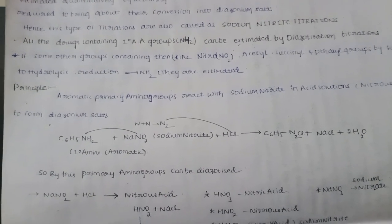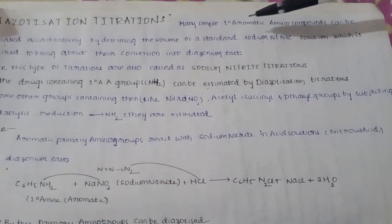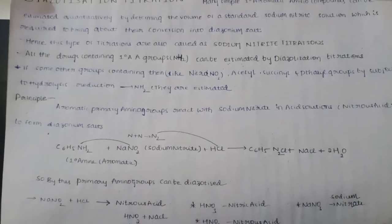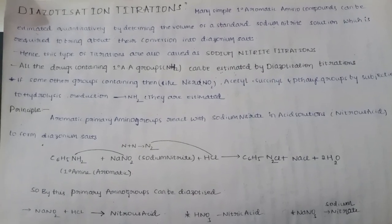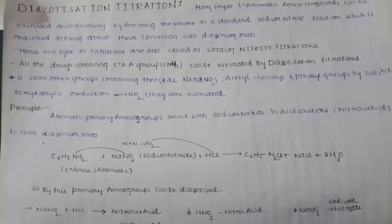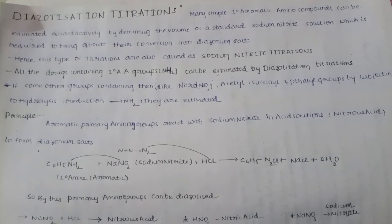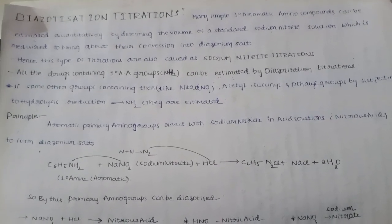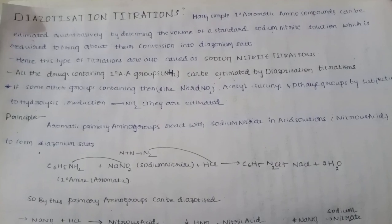Many simple primary aromatic amine compounds can be estimated quantitatively by determining the volume of a standard sodium nitrite solution which is required to bring about their conversion into diazonium salt.